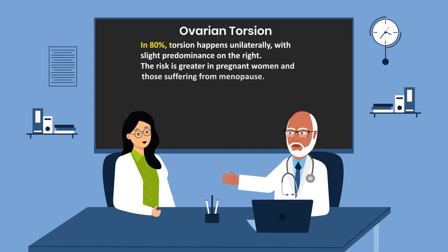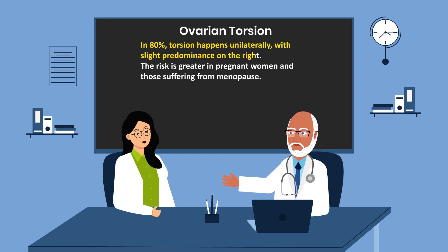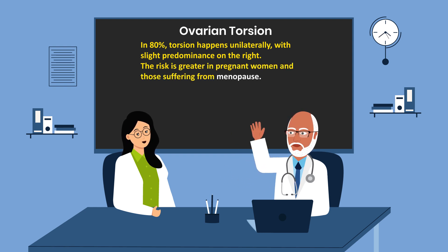In 80% of cases, torsion happens unilaterally with a slight predominance on the right. The risk is greater in pregnant women and those suffering from menopause.